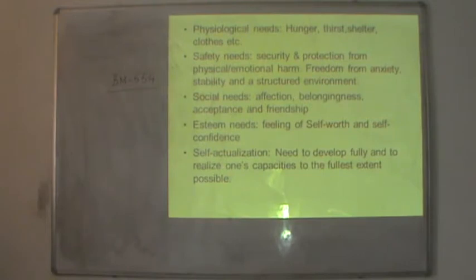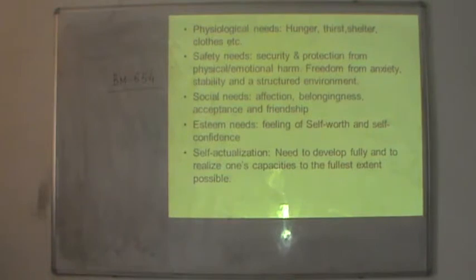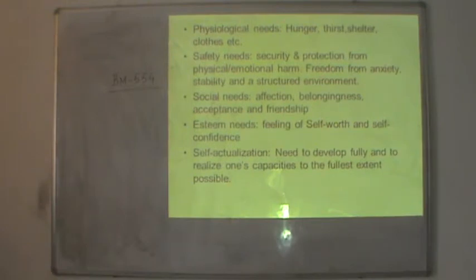Firstly, physiological needs. Physiological needs as per Maslow are the basic needs — hunger, thirst, shelter, clothes, etc. These should be satisfied because they are the basic sustenance which makes the existence of a person possible. After a person satisfies these physiological needs, he would move on to the next higher level need, which is safety needs.